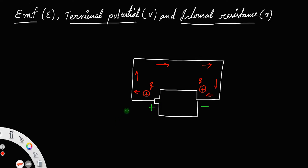So Q is now at the negative side. In order to move a positive charge from the positive side of the battery to the negative side, you do not have to do any work because it will naturally happen — positive charges naturally move from positive to negative. But if you have to move this positive charge Q from the negative side back to the positive side of the cell, you have to do some work, because no positive charge will move towards the positive terminal naturally.